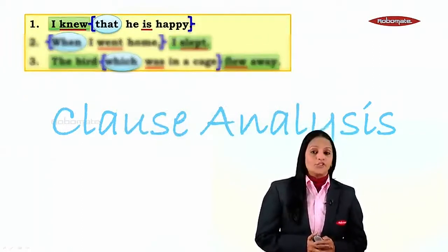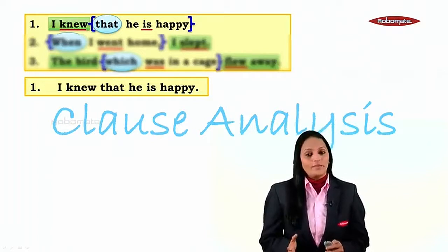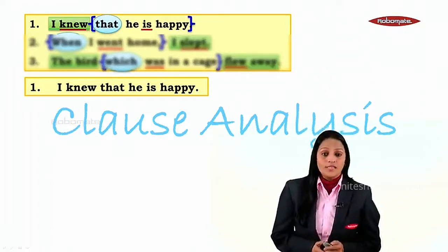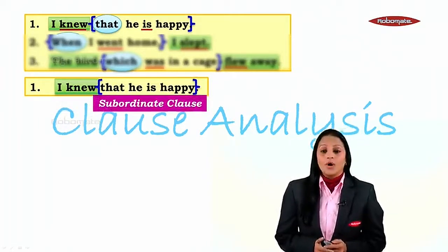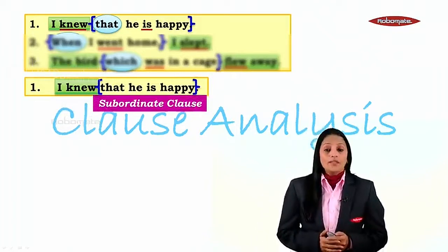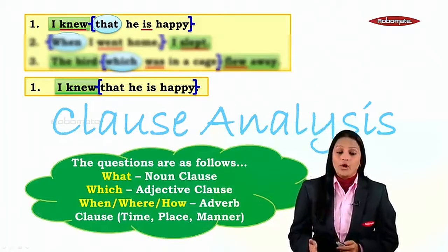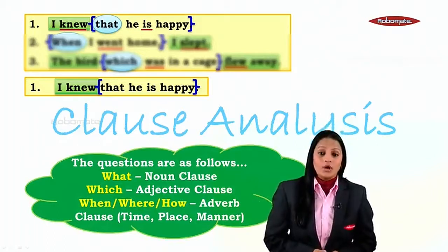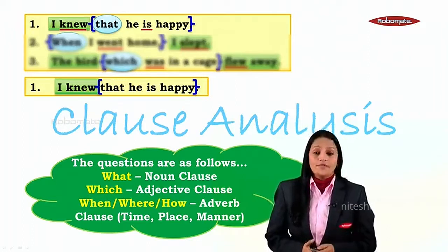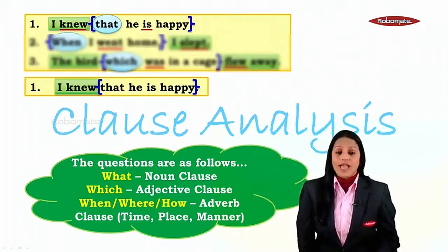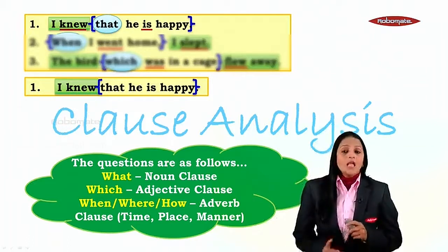We will do it with these three examples which we have already taken. Now, we know that we have to identify which type of subordinate clause, and for that we have to ask a question to the main clause so that we get the answer as the subordinate clause. The questions are: what, when, where, how, which. If the answer is for 'what', it is a noun clause; for 'which', it is an adjective clause; for 'when', 'where', 'how', these are adverb clauses of time, place, and manner respectively.